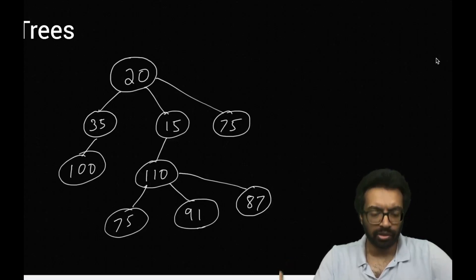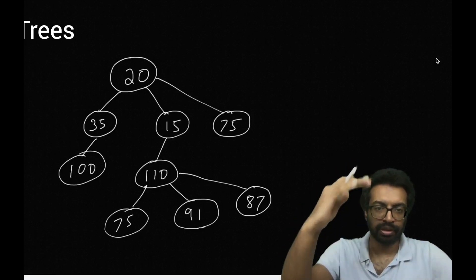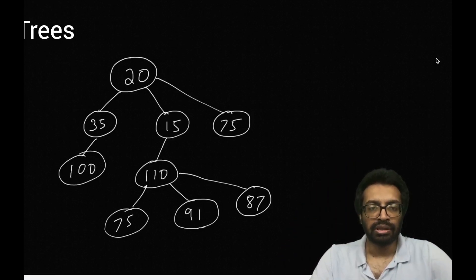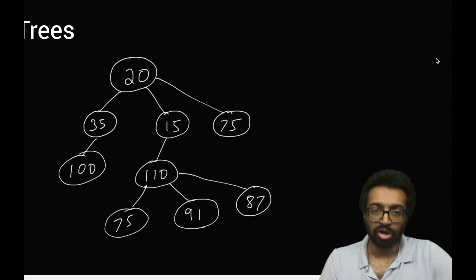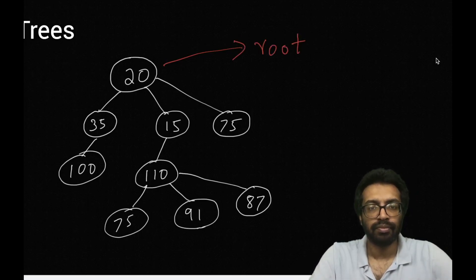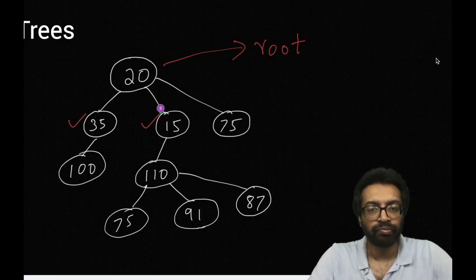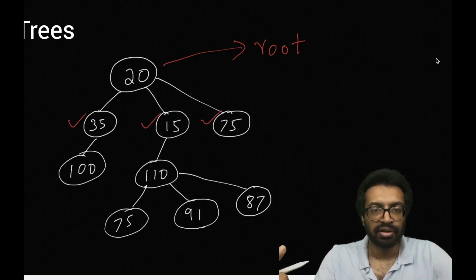Hello, welcome back. We are looking at a tree of numbers. As we had said earlier, our tree grows from top down. I am going to introduce certain terminologies which are used in tree. The topmost node is called as the root of the tree. The root of the tree has three children: 35, 15, and 75 are the children of 20.